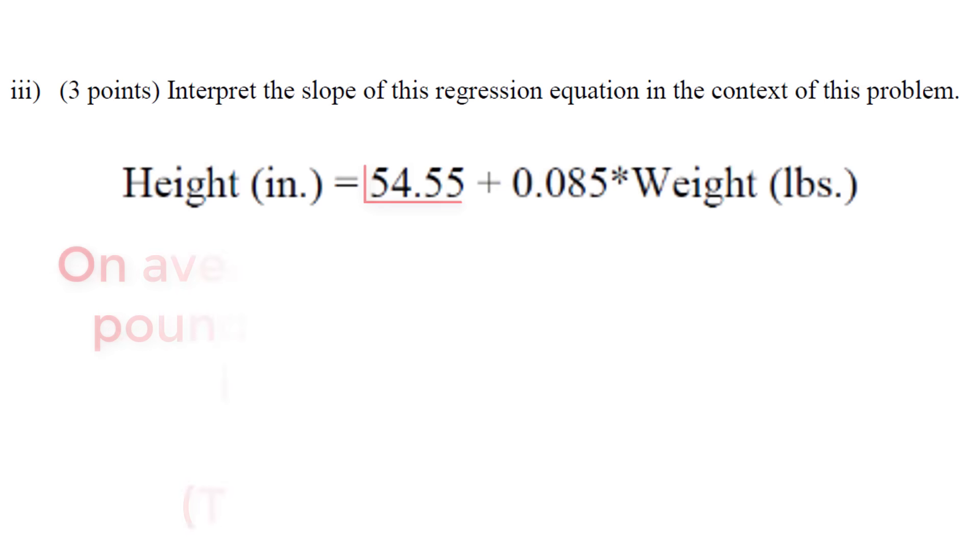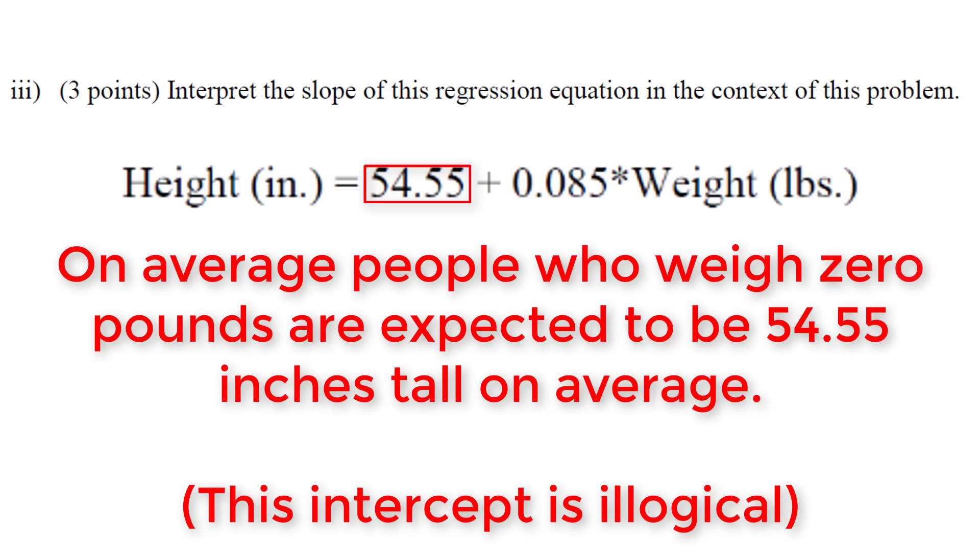If we interpret the intercept (not on the practice test, but useful): on average, people who weigh 0 pounds are expected to be 54.55 inches tall. When x equals 0, we expect y to be b₀. This doesn't make sense.